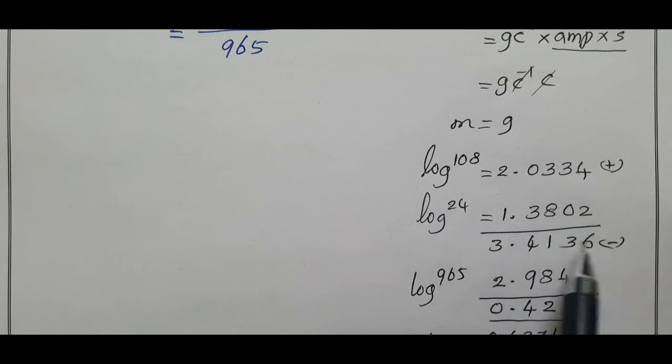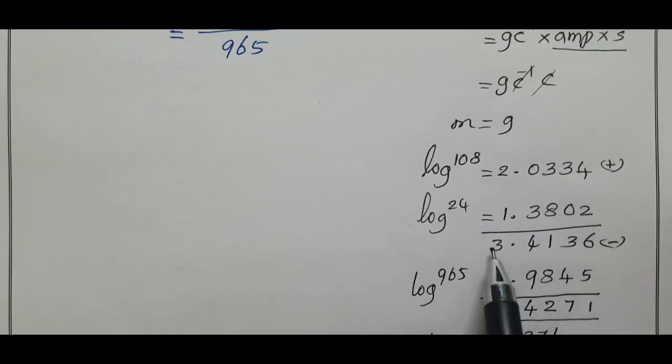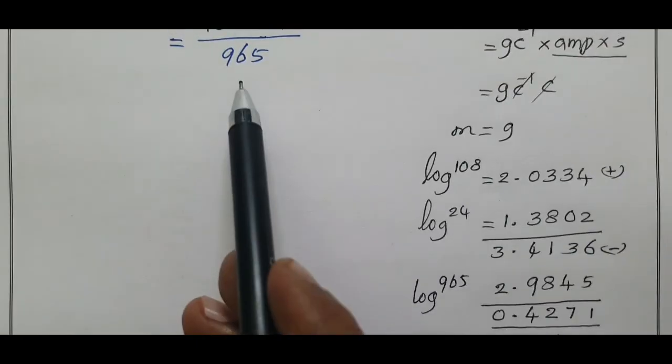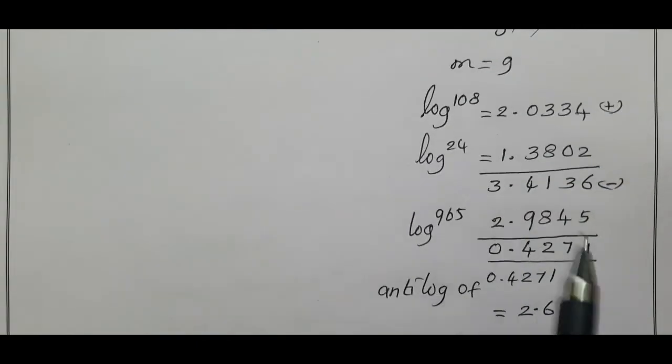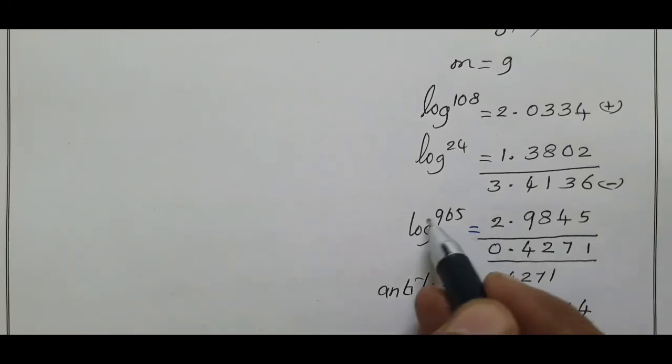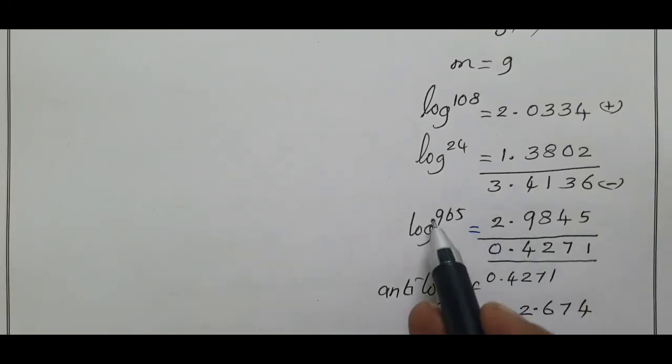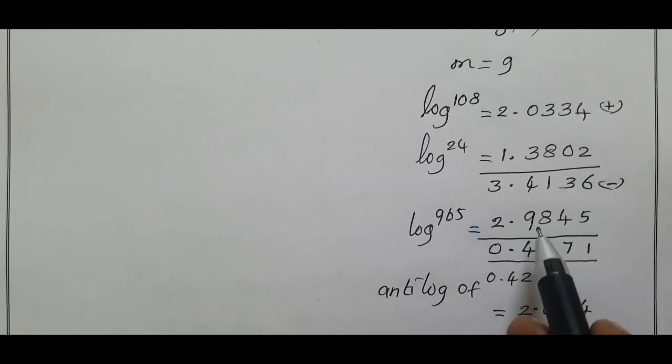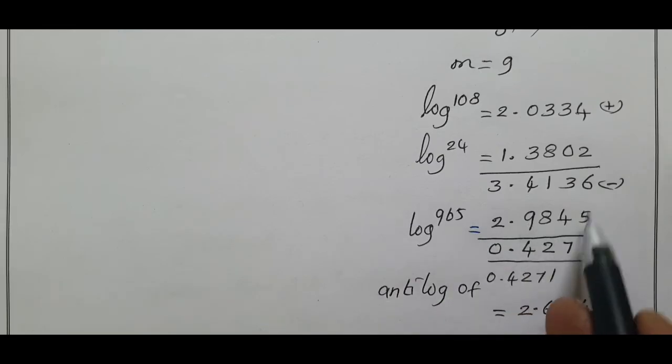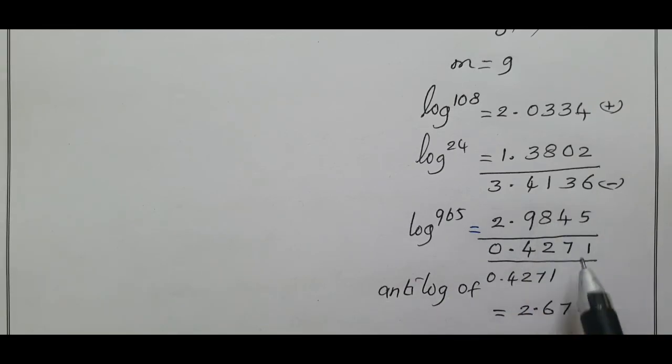965 is in the denominator, so log 965, which is a 3 digit number, gives 2.9845. When we subtract these two we get 0.4271. The antilog of this value gives 2.674.